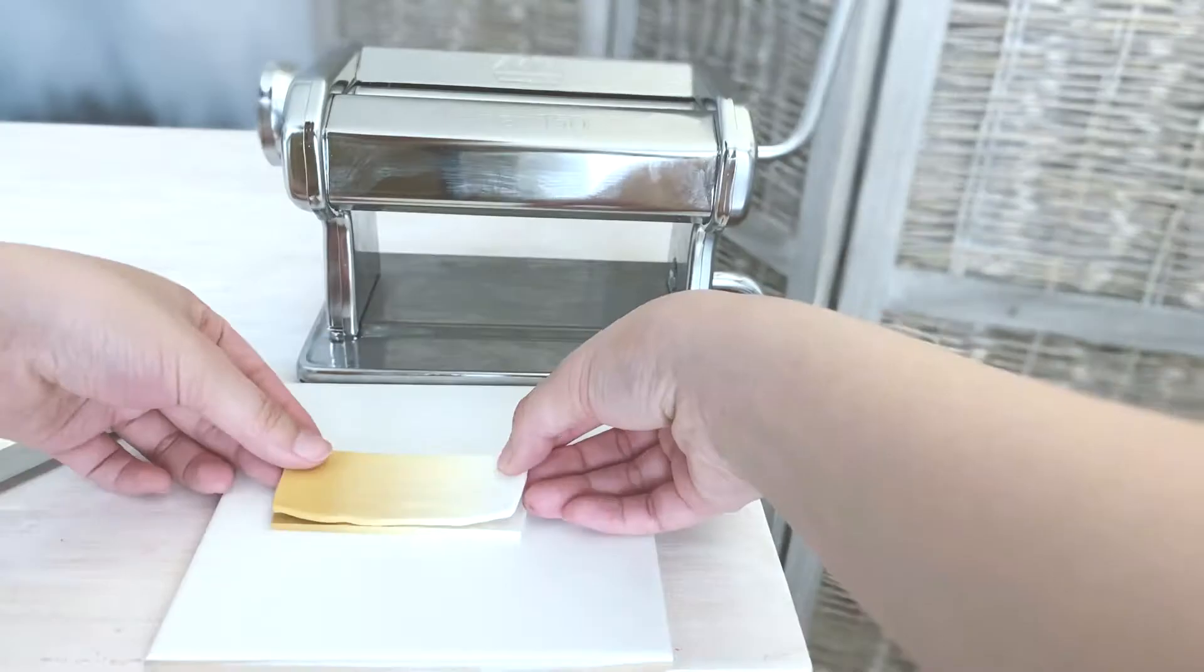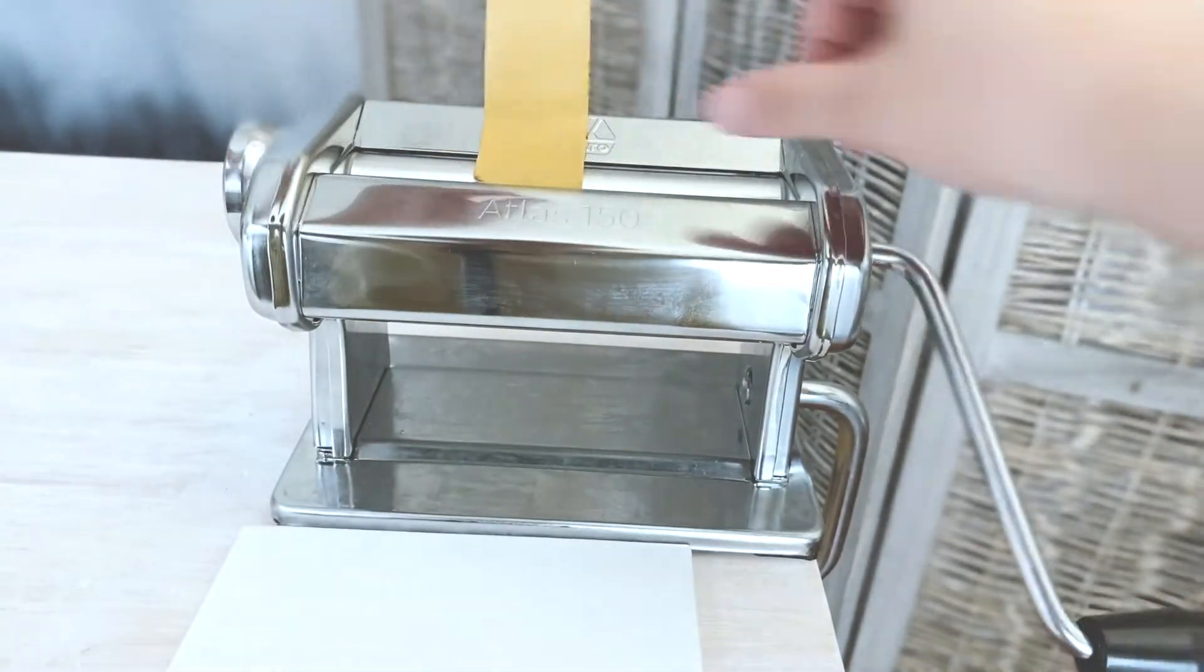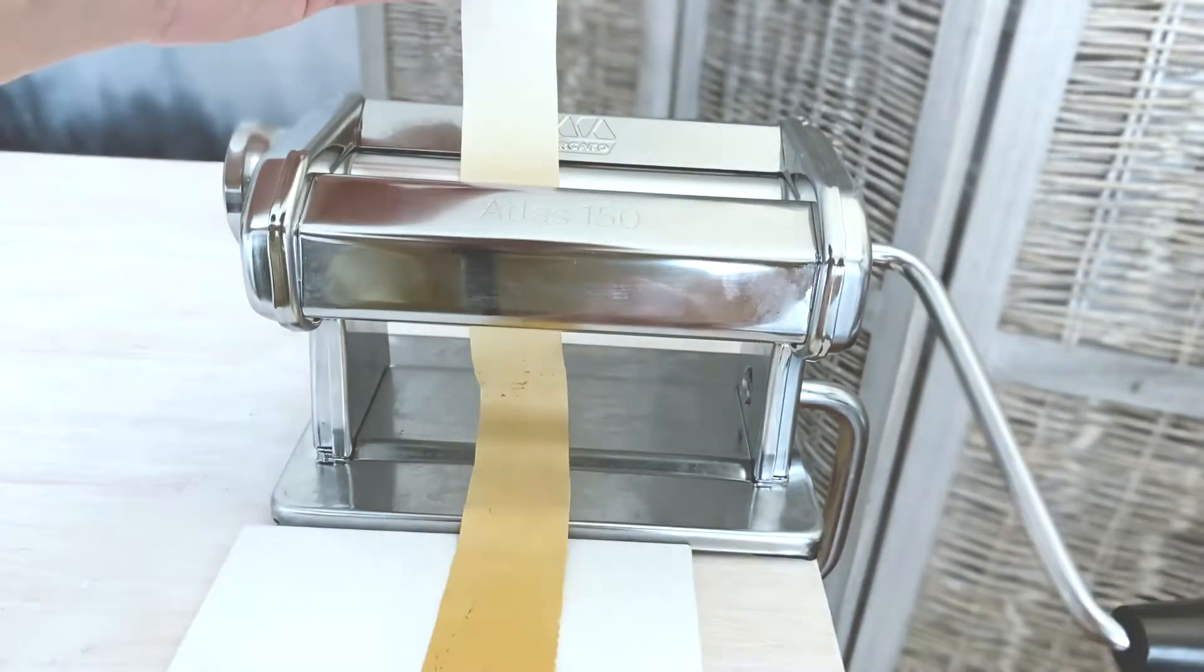Creating gradient loaves. Gradient loaves are essentially square canes with a gradient pattern. To start off, you want to stretch your sheet in the same way you did with caning.